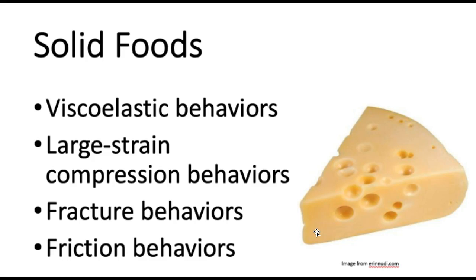So if we look at friction behaviors, we can see how our solid food is going to slice or shred. If we're putting this cheese through a processing line making little slices of Swiss cheese, we want to make sure the slices come out very uniform. You don't want to buy a package of sliced Swiss cheese and have one slice look good, then the next one crumbled into little bits, and the one after that be twice as thick. That's not a great experience. With solid foods, these are the kinds of things we look at because we don't just move them around with our tongue — we actually chew them. So we need to look at more behaviors than we do for fluid and semi-solid foods.